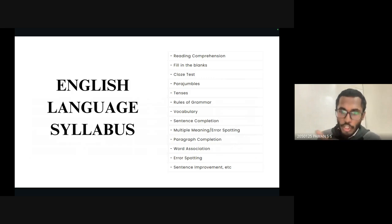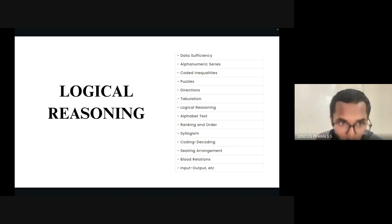Starting with logical reasoning, it's very important you know about data sufficiency, alphanumeric series, puzzles, directions, alphabet test, ranking and order, syllogism, coding-decoding, seating arrangements, blood relations, and more. I've made links in the description box where you can refer and buy books. RS Agarwal books for logical reasoning are good, and for English, Bakshi's book is also good. I've asked all my students to refer to these, and it's really going to help you a lot.